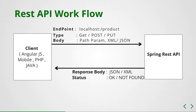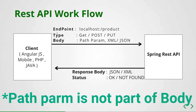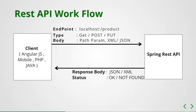On the left hand side you have a client component — it can be anything: a JavaScript framework, a mobile application, or anything. The client sends a request to the REST endpoint, in our case localhost slash product. The request type can be GET, POST, PUT, or DELETE. Along with the request type it sends content in JSON or XML format. On the server side we take the input, do some business logic, and send back the information using JSON or XML along with a status code.